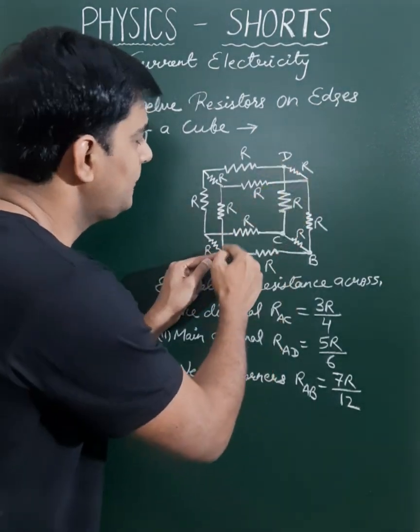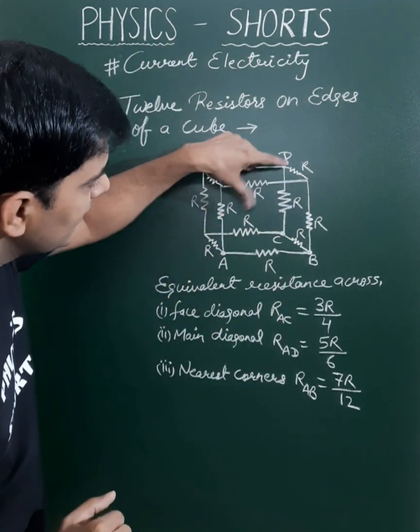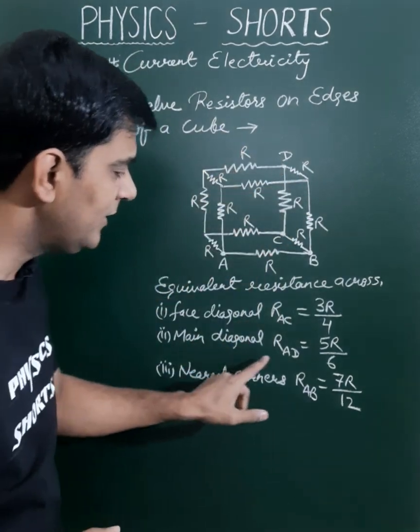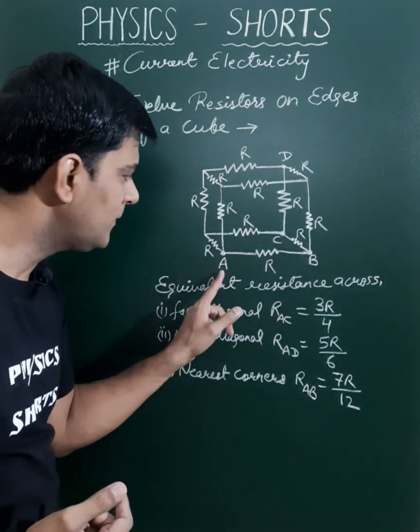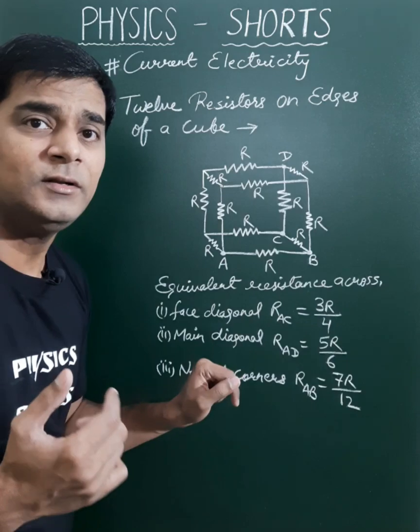Similarly, for the main diagonal I am taking points A and D. Across points A and D, this is the main diagonal, and the equivalent resistance will be 5R/6.